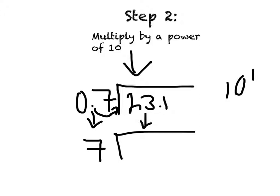This moves the decimal point to the left once. Now we've got a new problem: 231 divided by 7.